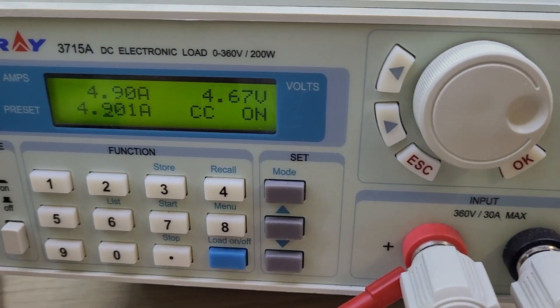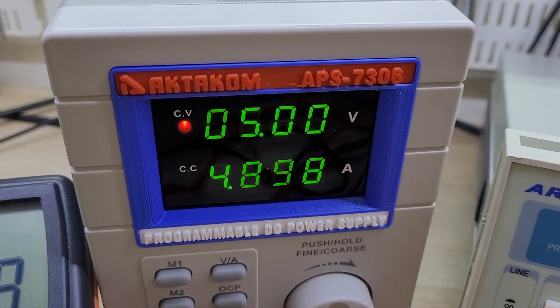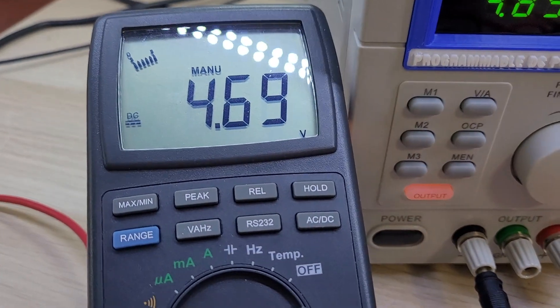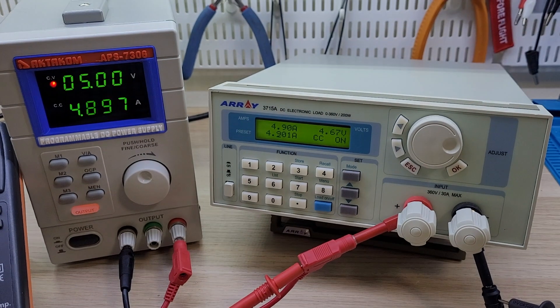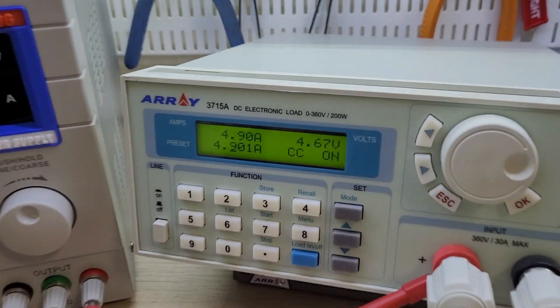However, an eagle eyed viewer of our previous video noticed a slight difference in the readings between the display of the power supply. Here we see 5V and on the electronic load, here we see 4.67V.